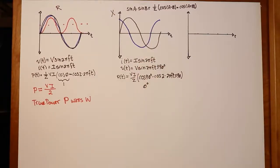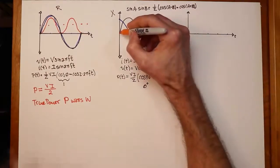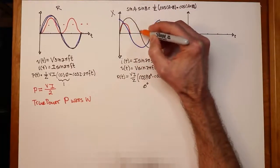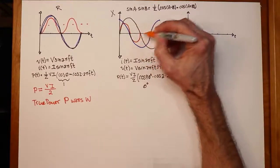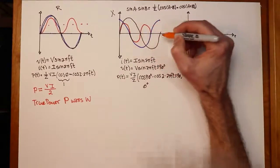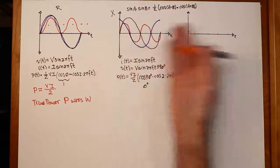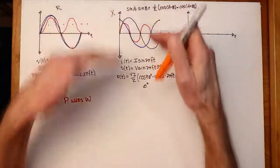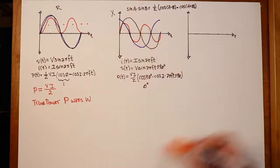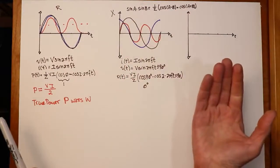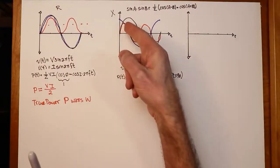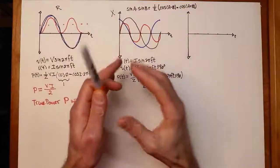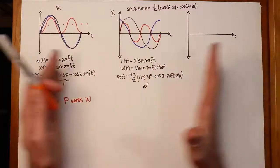Drawing this result, we get a double-frequency sinusoid with no DC offset. For half the cycle it's absorbing power, and for the other half it's releasing power — like compressing a spring and letting it go. Over a full cycle the average is zero: there is no net true power dissipated in an ideal inductor or capacitor.